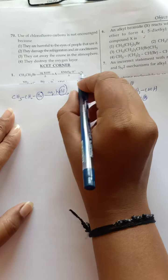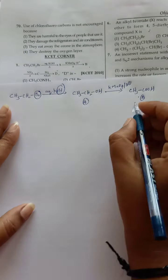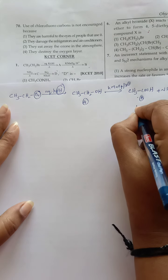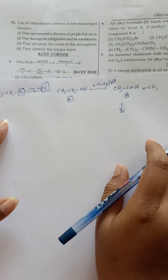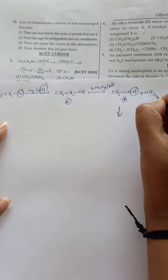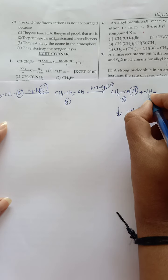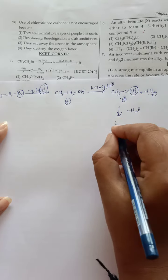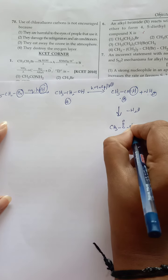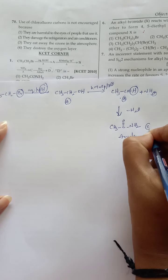This is B. Now B reacts with ammonia. When CH3COOH reacts with NH3, OH from here and one hydrogen from ammonia eliminate as H2O. What is left is NH2. NH2 reacts with CO, and we get CH3C double bond O with NH2 — amide is formed as C.